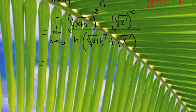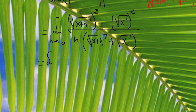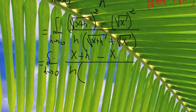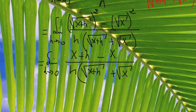Continuing to simplify, the limit as h reaches 0. The square root and the square cancel, so I have x plus h. The same thing for square root of x — the square root and square cancel — leaving x. So I have x plus h minus x, divided by h times square root of x plus h plus square root of x. The x and negative x cancel.